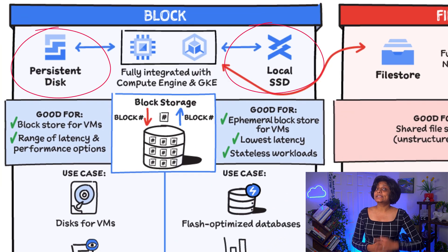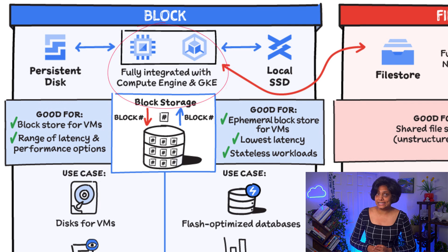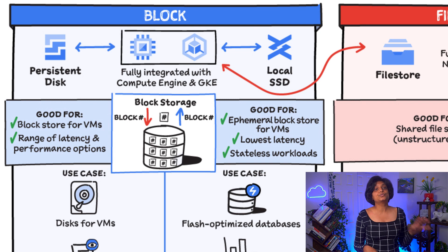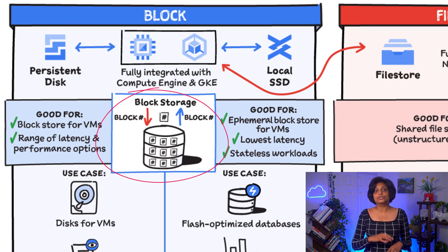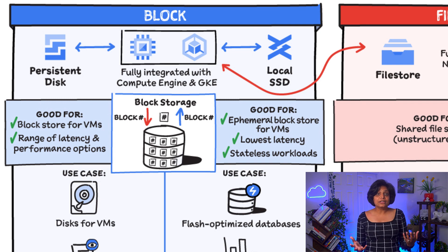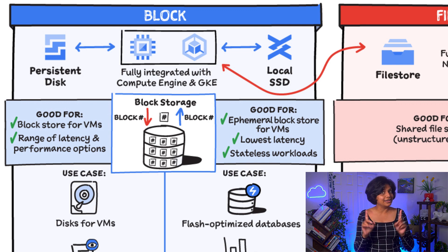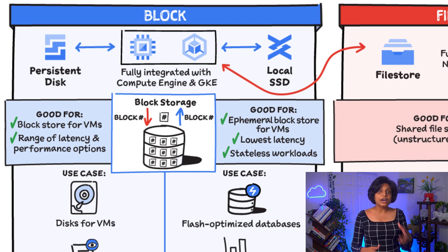Persistent disk and local SSD are block storage options. They are integrated with Compute Engine VMs and Kubernetes Engine. With block storage, files are split into evenly sized blocks of data, each with its own address, but with no additional information or metadata to provide more context to what that block of data is. Block storage can be directly accessed by the operating system as a mounted drive volume, which is not the case with object store. Persistent disk is block storage for VMs, which offers a range of latency and performance options.